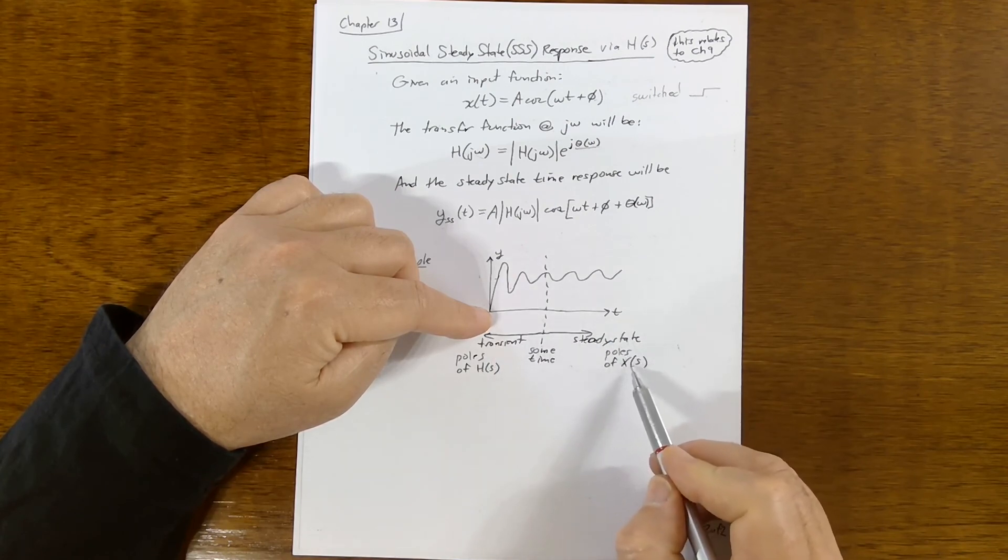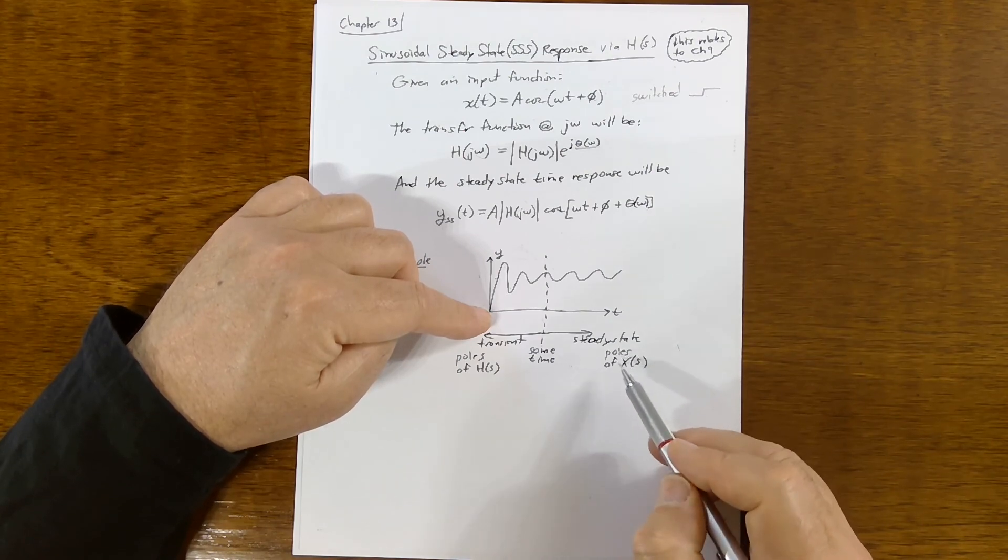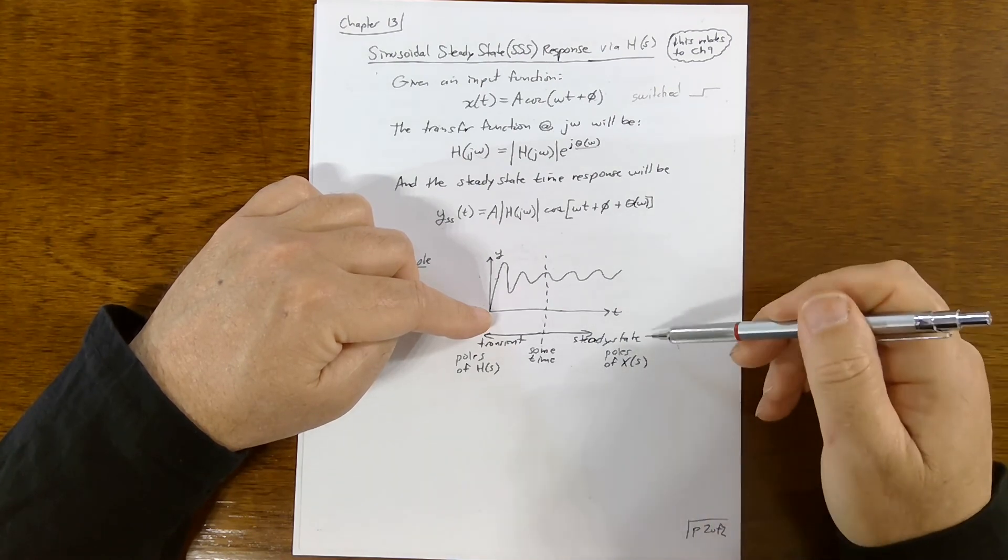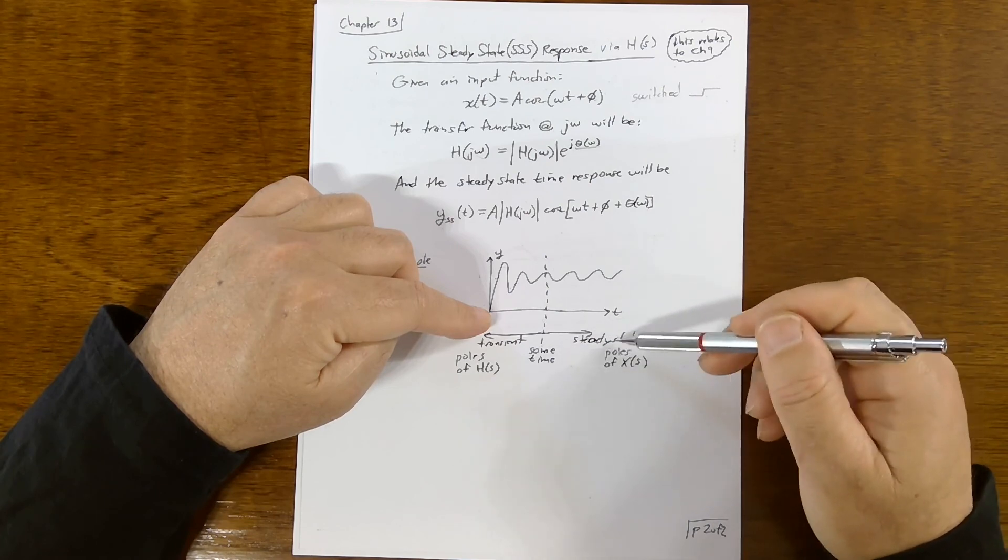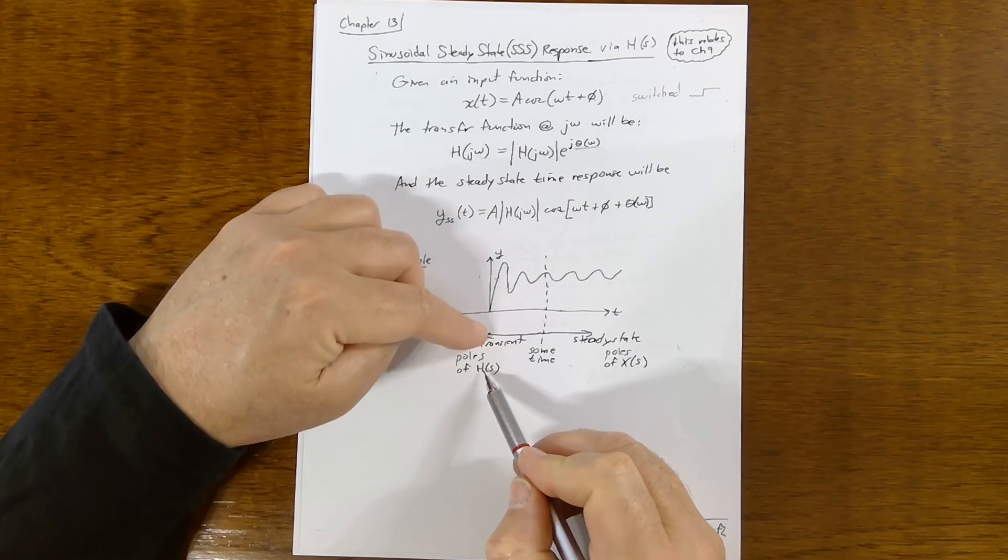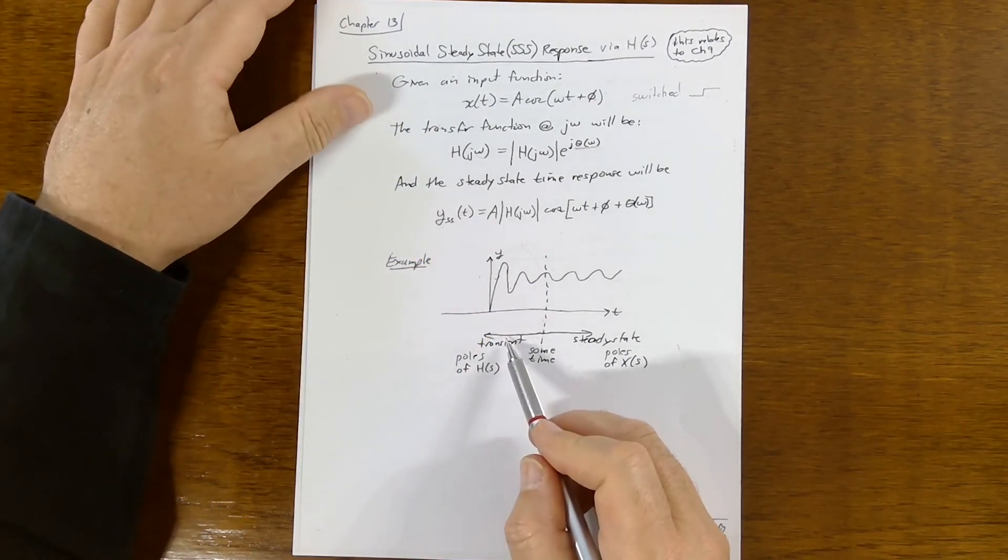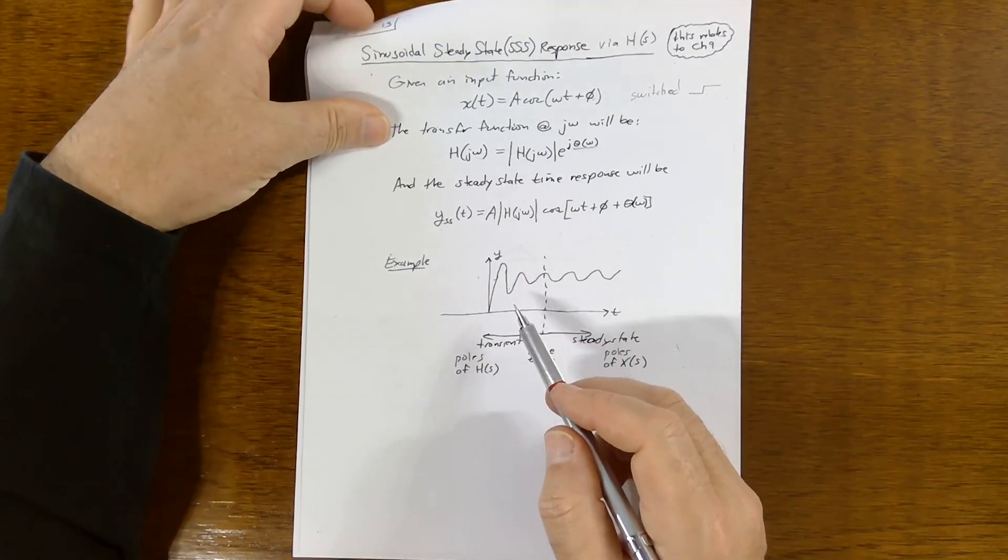The steady state signal is given by the poles of the input function. This is going to be a Laplace partial fraction algebraic expression. So you look at the poles, the values of the denominator that make the partial fraction term zero. Those will give you an idea of what the steady state will look like. And then you look at the poles of the transfer function and that'll give you an idea of what the transient part of the signal will look like.